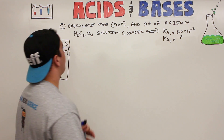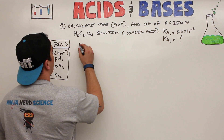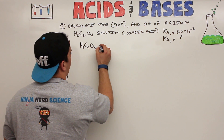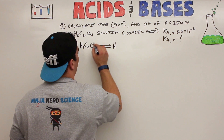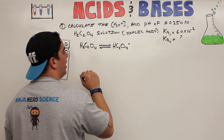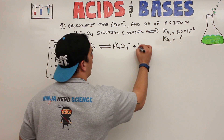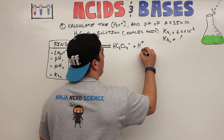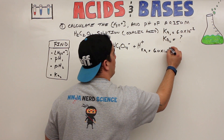Let's write out the full equation. H2C2O4 deprotonates and is converted into HC2O4⁻. Because this molecule gives up an H, and in aqueous solution it gives it to water forming hydronium ions — but we'll just write H⁺. We'll do this first ionization first, then the second. Ka1 for this reaction is 6.0×10⁻².